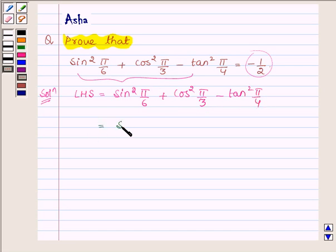which can further be written as sin π upon 6 whole square plus cos π upon 3 whole square minus tan π upon 4 whole square.